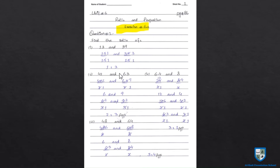Part 2: 42 and 63. 42 and 63 के लिए 7 लेंगे — 6's are 42, 9's are 63 — 7 ने दोनों को divide किया, 6 and 9 आए। अब देखें क्या यह मजीद simplest form में आ सकते हैं — yes. 3 लेंगे: 2's are 6, 3's are 9 — अब यह मजीद divide नहीं हो सकते। So 2 is to 3.